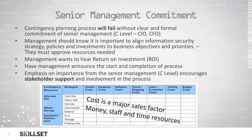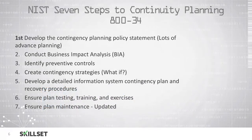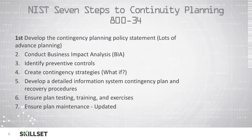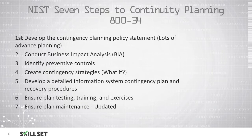NIST provides a seven-step business continuity planning model. The first step is to develop the contingency planning policy statement, and you should always have a lot of advanced planning before conducting any type of business continuity planning. The second step is to conduct a Business Impact Analysis to determine the impact of different types of disasters. The third step is to identify any preventative controls that you have in place.